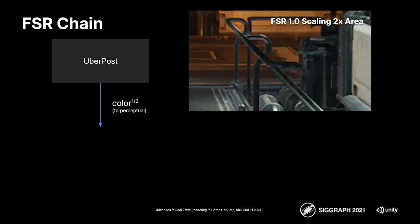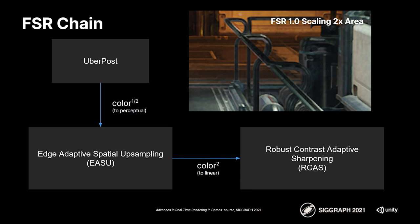For our effect chain, we start with our uber post-process, which outputs everything after bloom and after tone mapping. We output at the square root of that target — what we call spatial perceptual space. This goes into the EASU algorithm, which consumes it and applies the upsampler. After it outputs, we go back to linear space and apply the RCAS algorithm. The RCAS algorithm improves on edging and details that were potentially lost before.